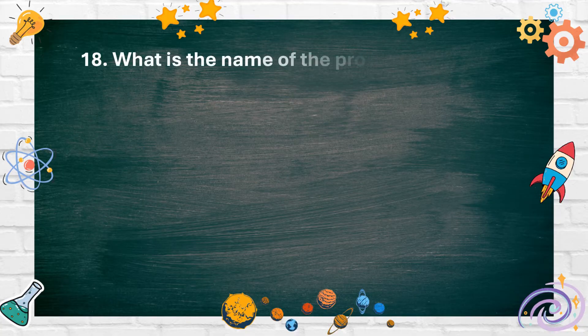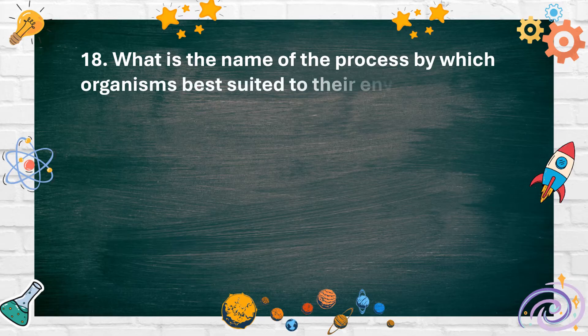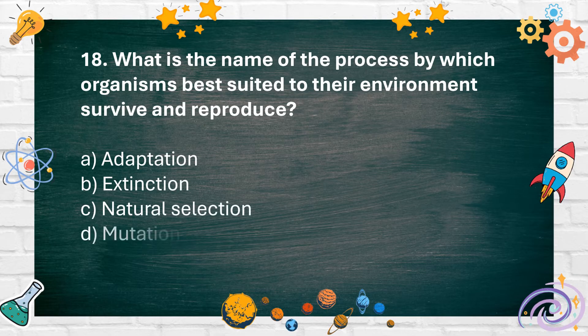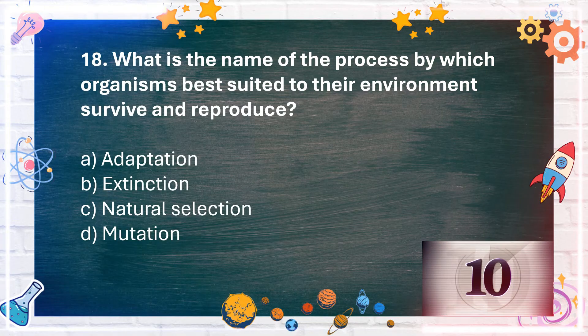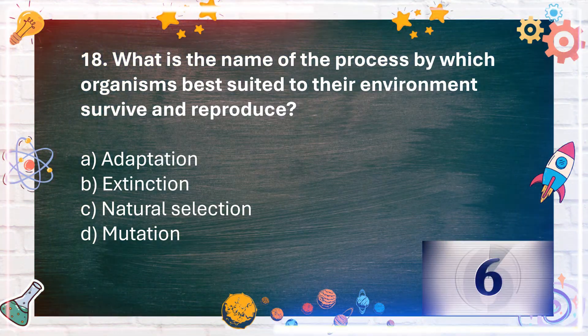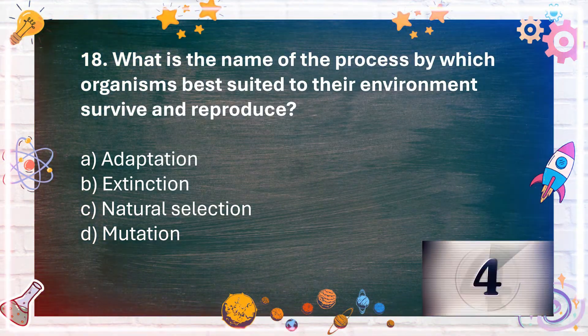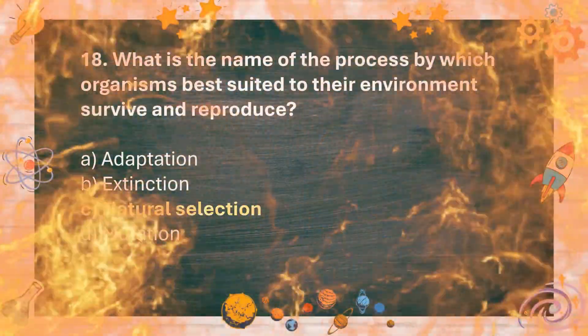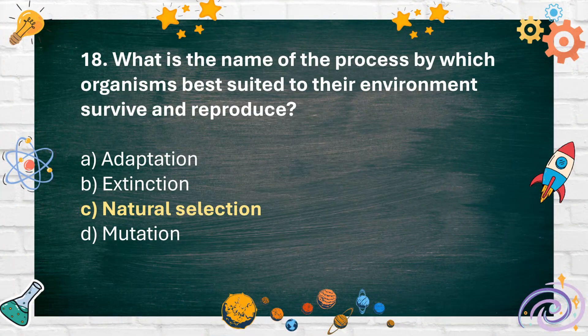Number 18: What is the name of the process by which organisms best suited to their environment survive and reproduce? A. Adaptation, B. Extinction, C. Natural selection, D. Mutation. The answer is C. Natural selection.